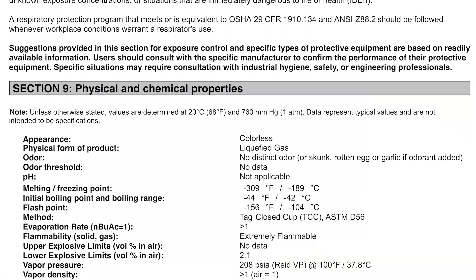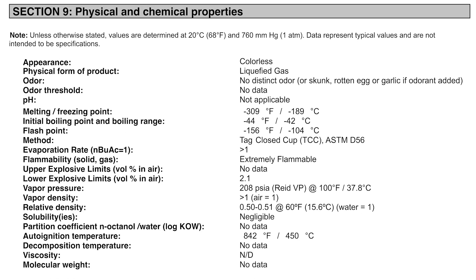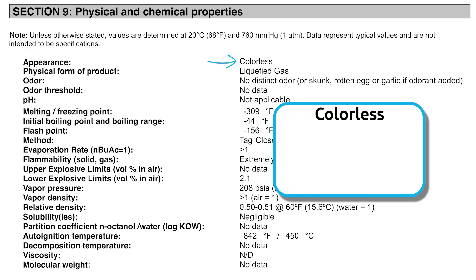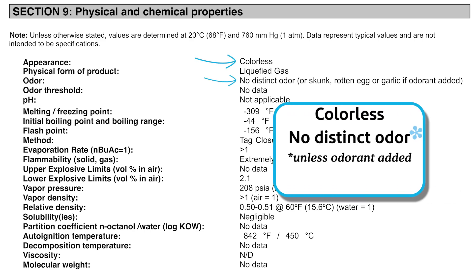Section 9: Physical and Chemical Properties. This section provides detailed information about propane, such as its colorless appearance, that there is no distinct odor unless an odorant is added, and that the boiling point is minus 44 degrees Fahrenheit.